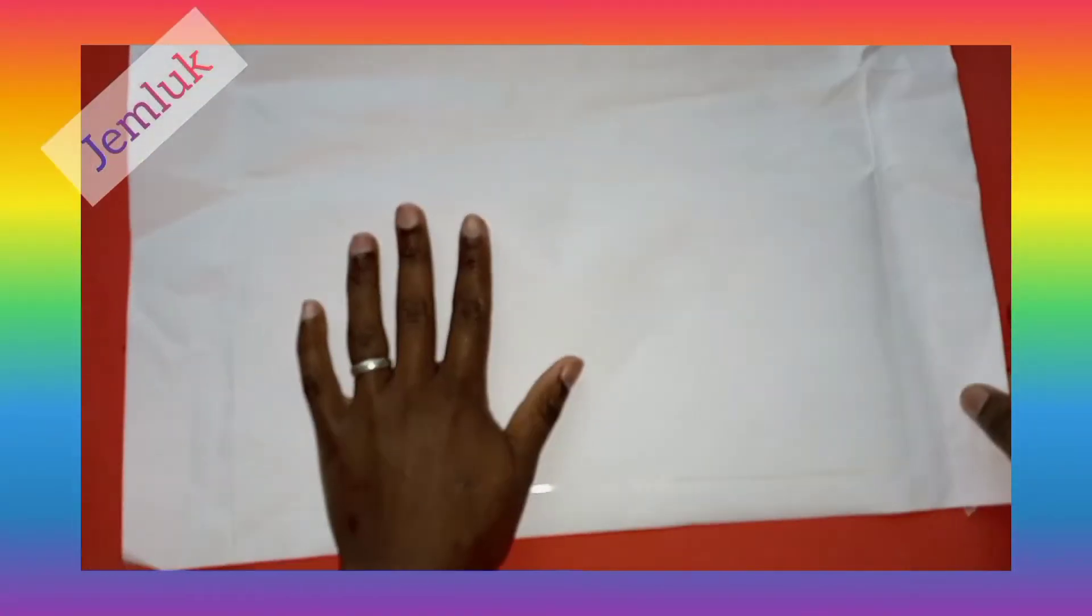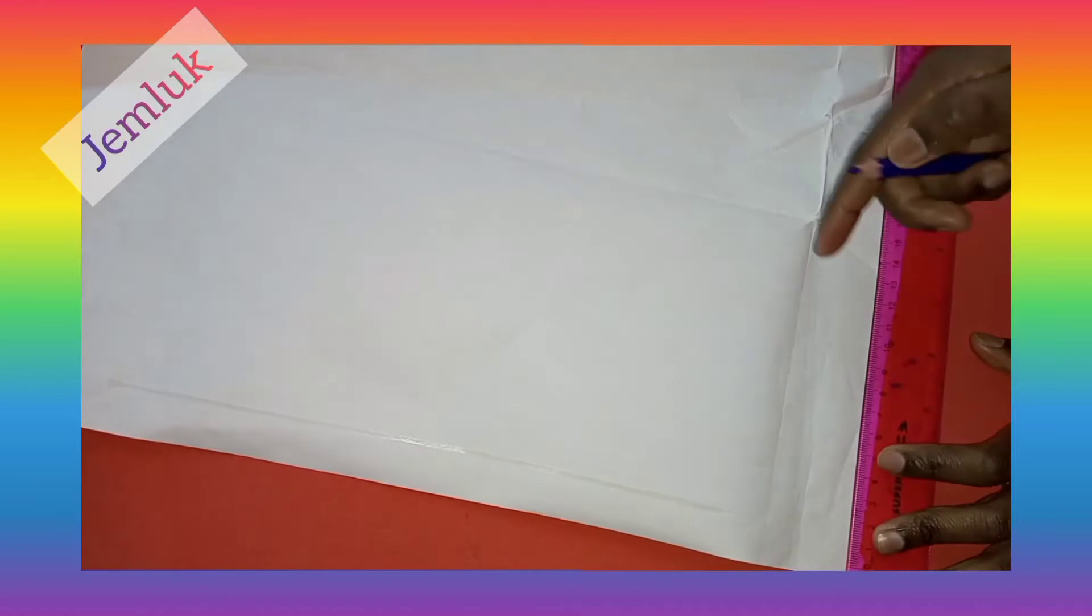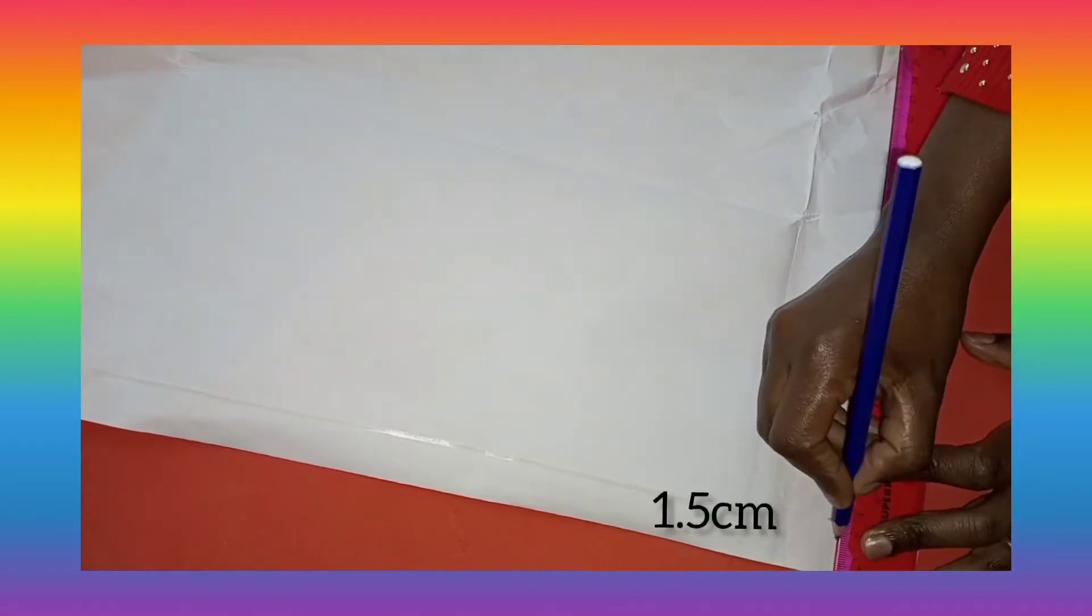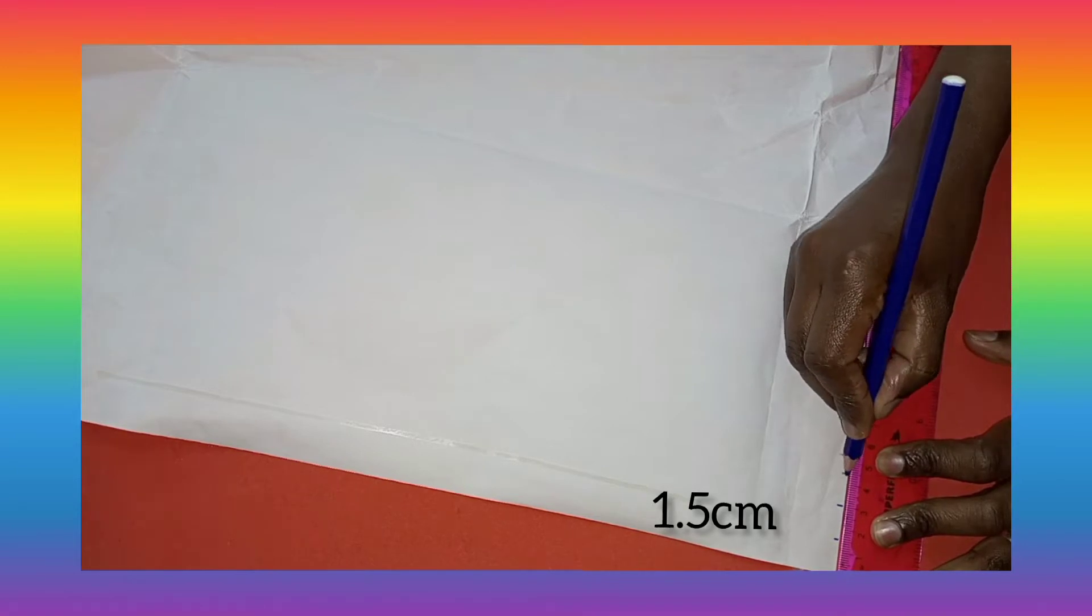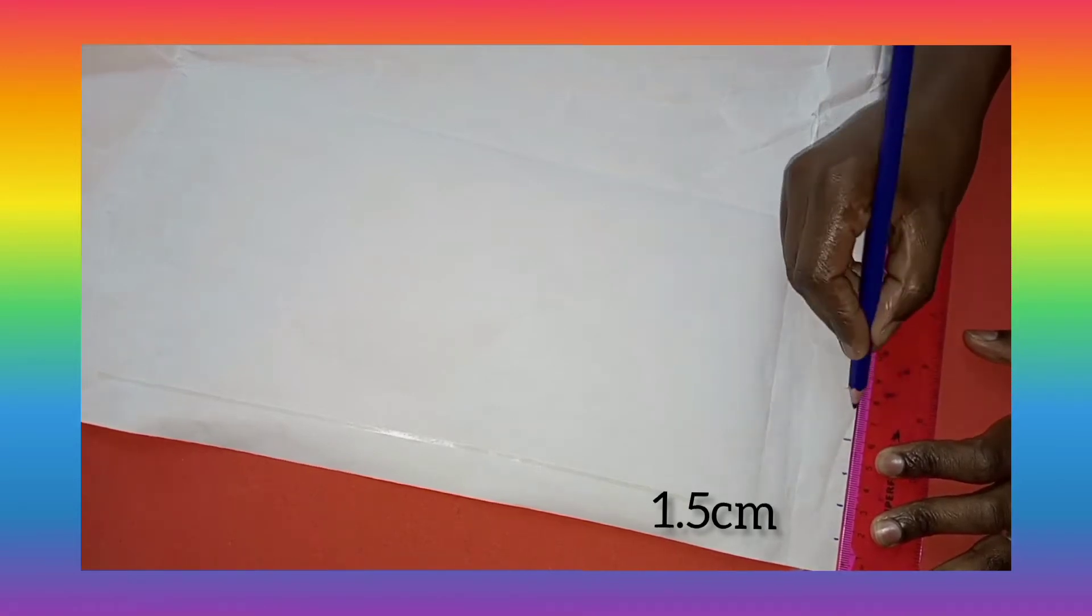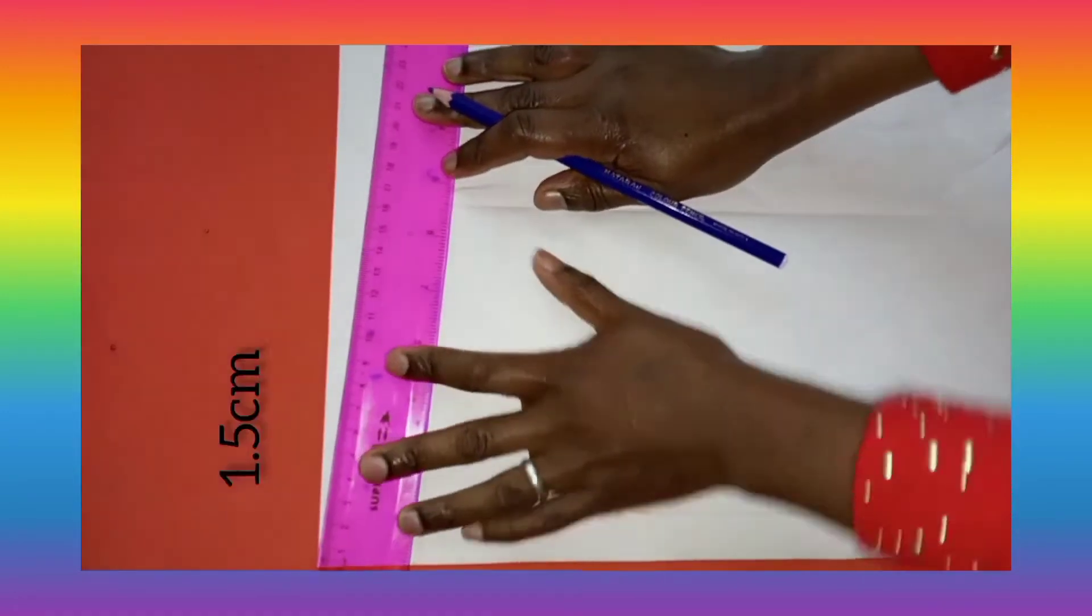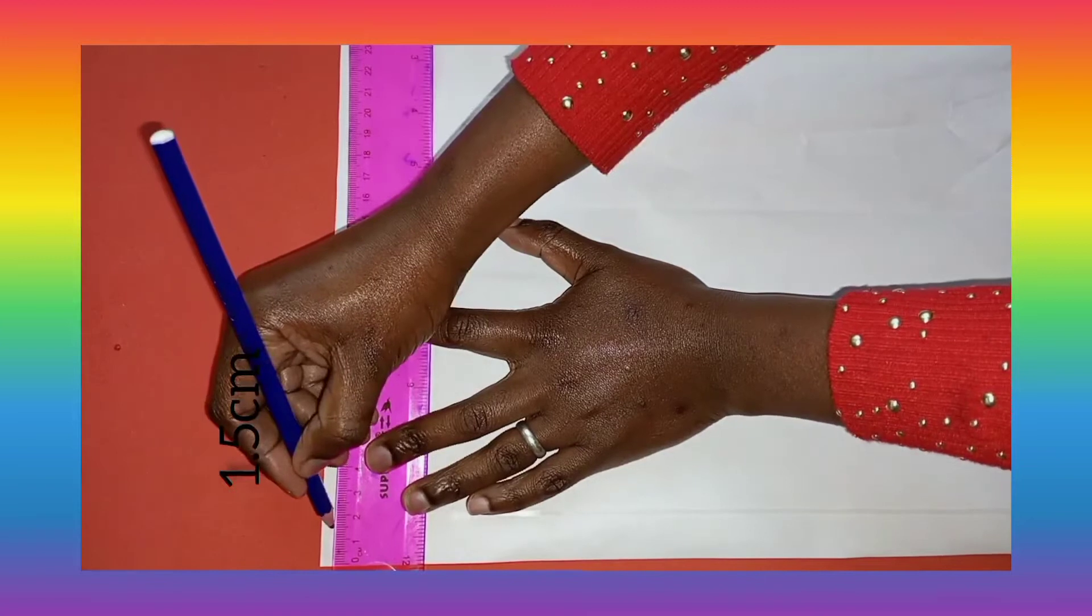The first step is to mark the size. You can use a range from one centimeter, one and a half centimeter, two centimeters, depending on the size of the bead that you want. This is the step where we are going to make the bead first, and then I'll show you how to make the necklace.